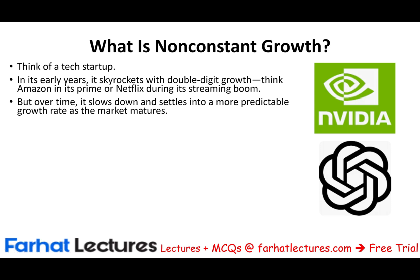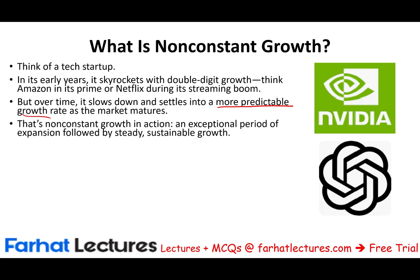What happens when you are growing at a high rate? You're going to have competitors coming in, and then your growth rate will start to flatten. It slows down and settles into a more predictable growth rate as the market matures because everybody comes in wanting to make the profit. Therefore, your growth rate will slow down as everybody else eats into the same market. That's non-constant growth in action — an exceptional period followed by steady sustainable growth.